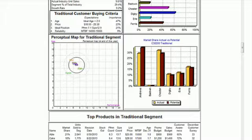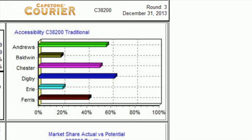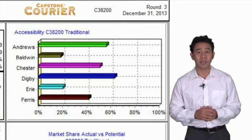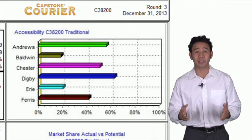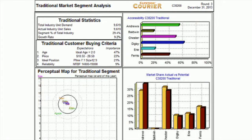Now let's look at accessibility in the traditional segment. First, it's difficult to acquire accessibility. For example, it could take Andrews another three years to reach 100%. And today, Andrews, Chester and Digby already have formidable advantages over Baldwin and Erie. And look at Erie. We know it has a decent product in EAT, but it will take years to correct the problems it has in accessibility and awareness. Not to mention that we'd expect Andrews, Chester and Digby to continue improving their positions.